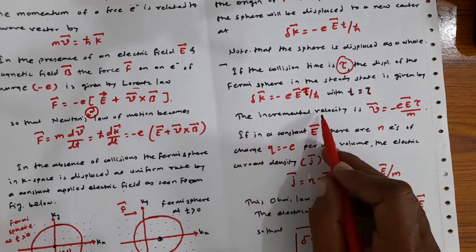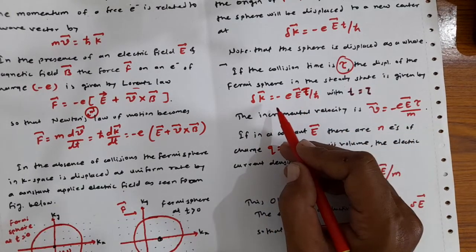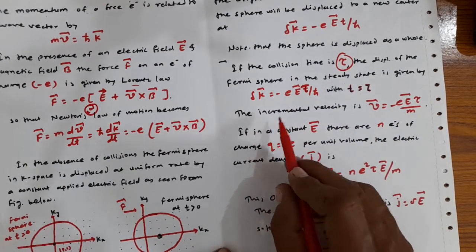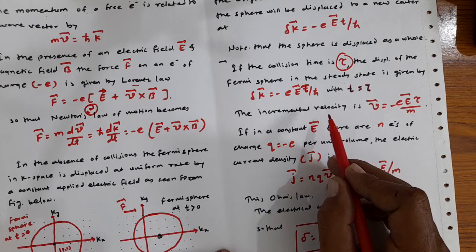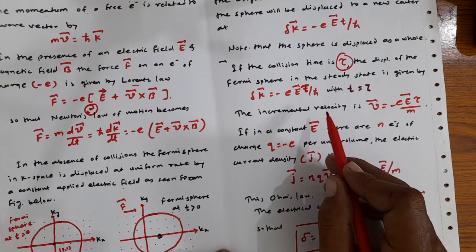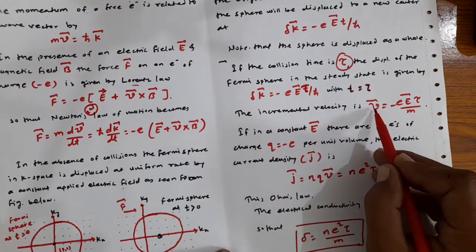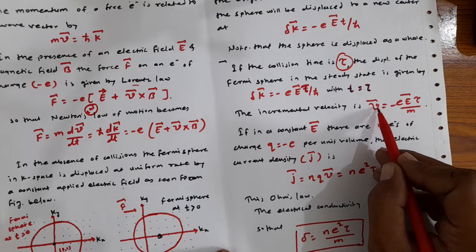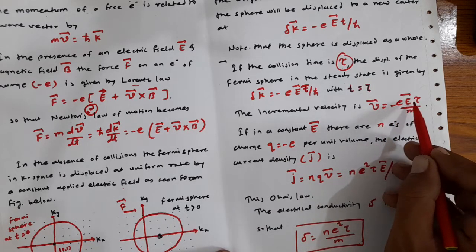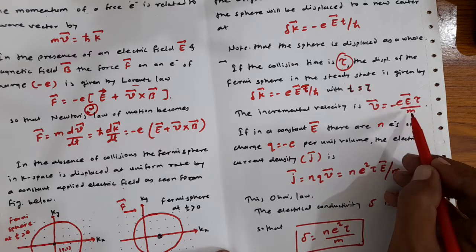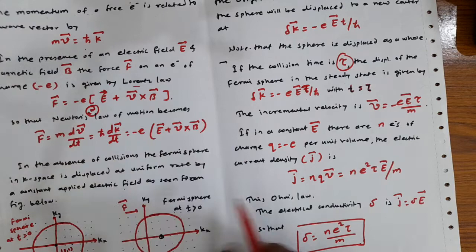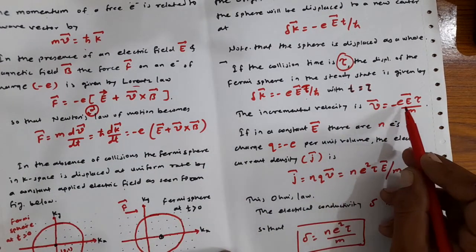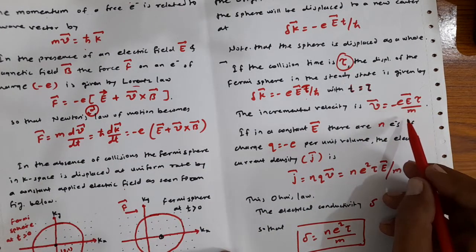Because of the application of the field, there is an incremental velocity. The displacement of the sphere in the steady state gives an incremental velocity v̄ = −eĒτ/m. Substituting this value from the above equation, we confirm that the incremental velocity v̄ = −eĒτ/m.